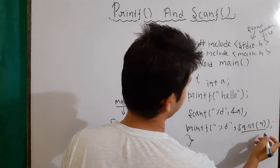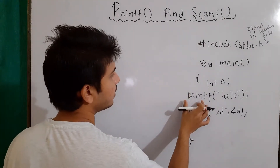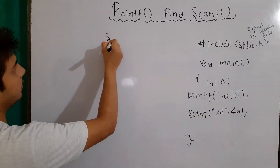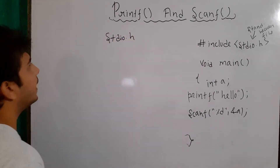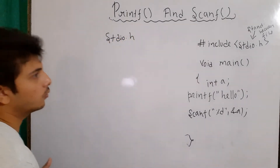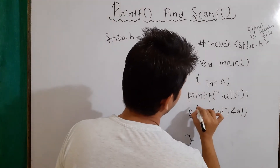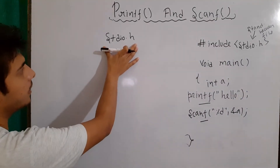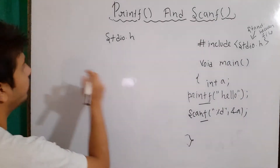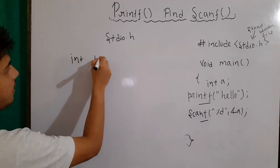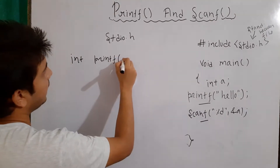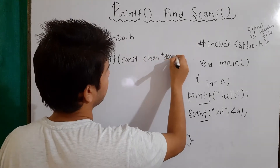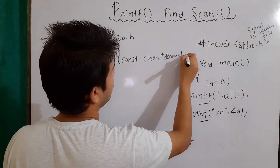Square root of 4 will give us two. Now we know where the prototypes of these functions are defined — inside the stdio.h file. We can also open this file and look at its code. The prototype of printf is: int printf(const char* format, ...).